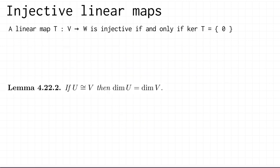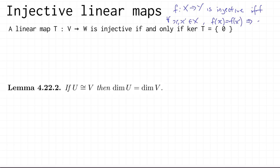We're now going to show an interesting property of injective linear maps. Recall the definition of injectivity: a function f from a set X to a set Y is injective, or one-to-one, if and only if for all x and x′ in X, if f(x) equals f(x′) then x equals x′. I claim there's a nice connection between injectivity and the kernel of a linear map — specifically, that a linear map is injective if and only if its kernel contains only the zero vector in its domain.